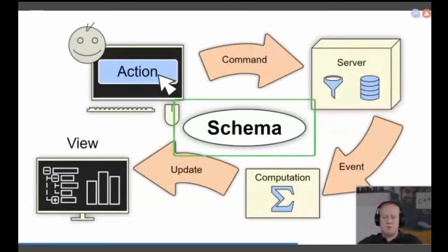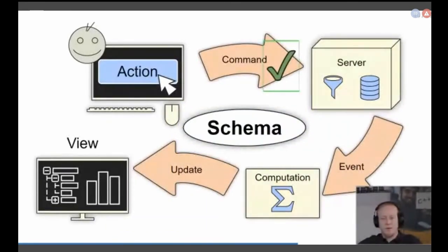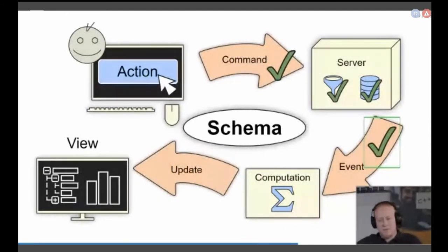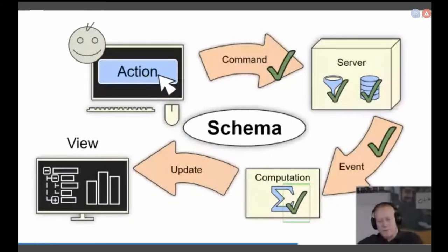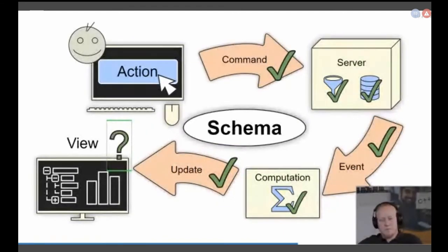If we go back to our slide for the complex system, we now have the schema in the center of the distributed system, and we generate everything from the schema. We generate the commands — we've seen that. The validation is just another function we can generate. The storage, the repositories — simple, done. Events — the same. And also our computations. We cannot actually generate everything, but everything that is boring, we can generate. It takes out all the stupid stuff. The update as well is generated, and for the views, we have to take a further look.